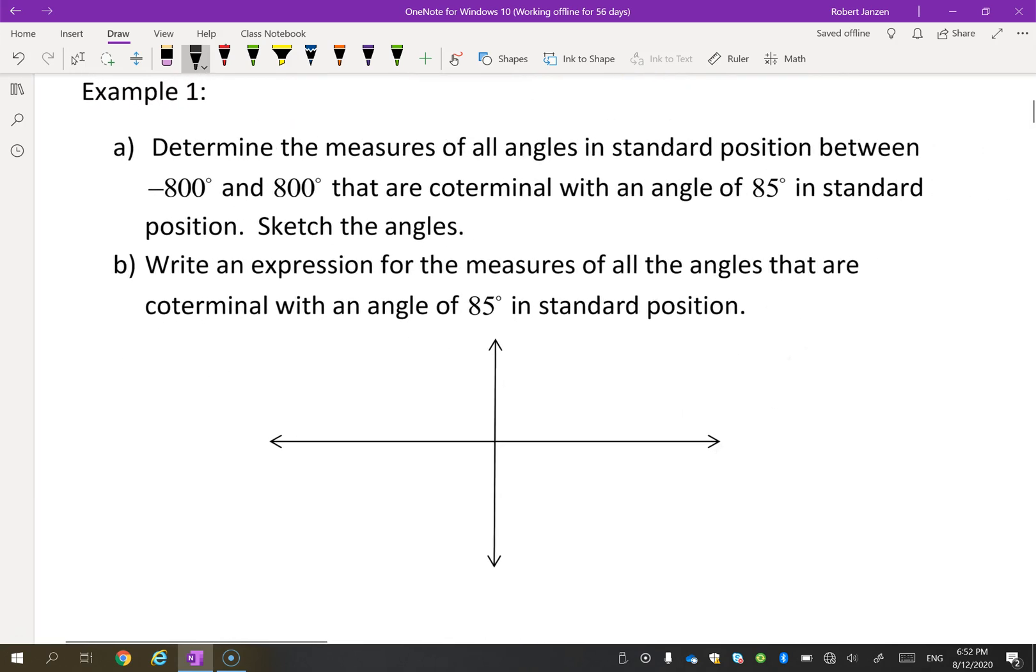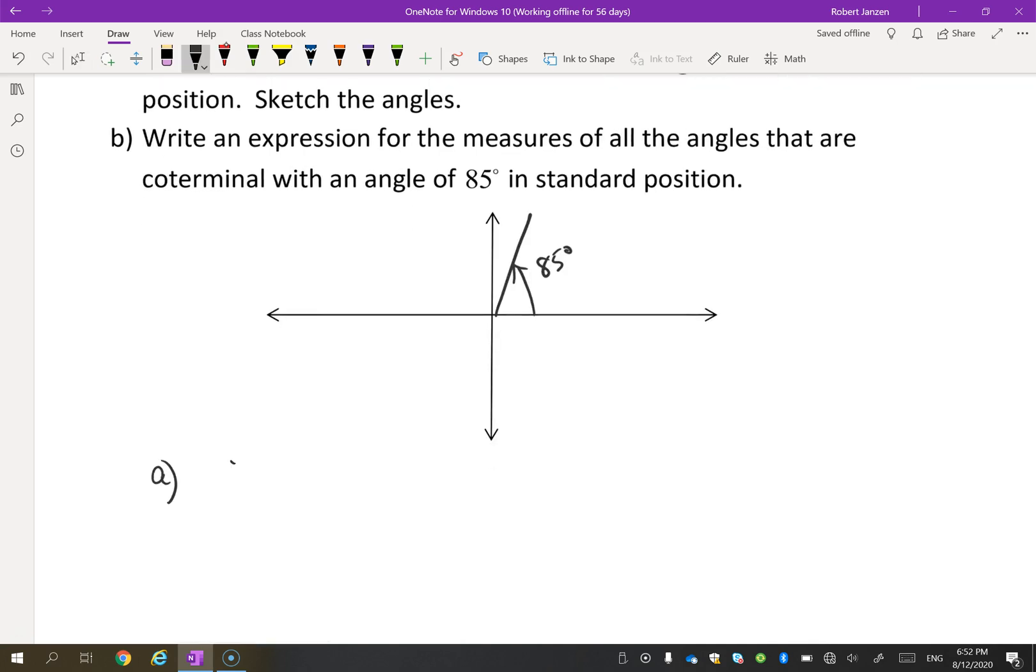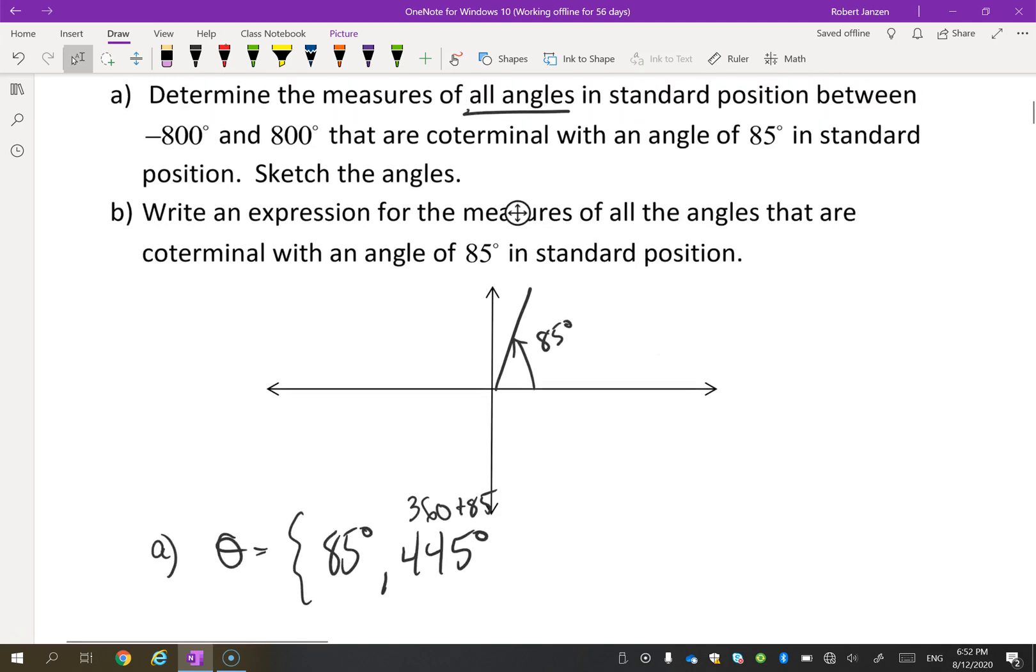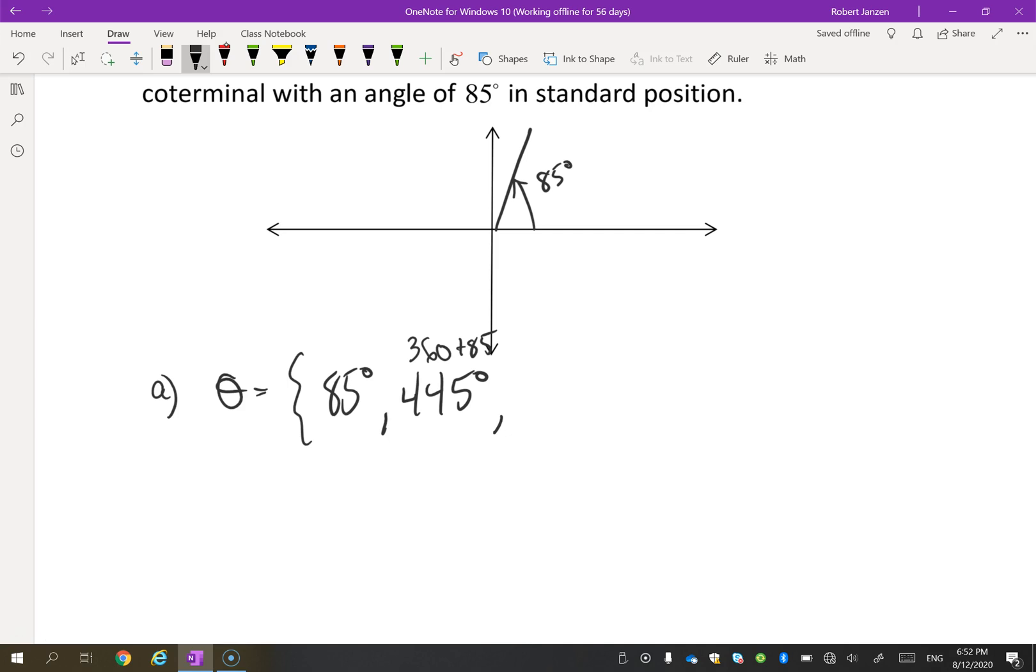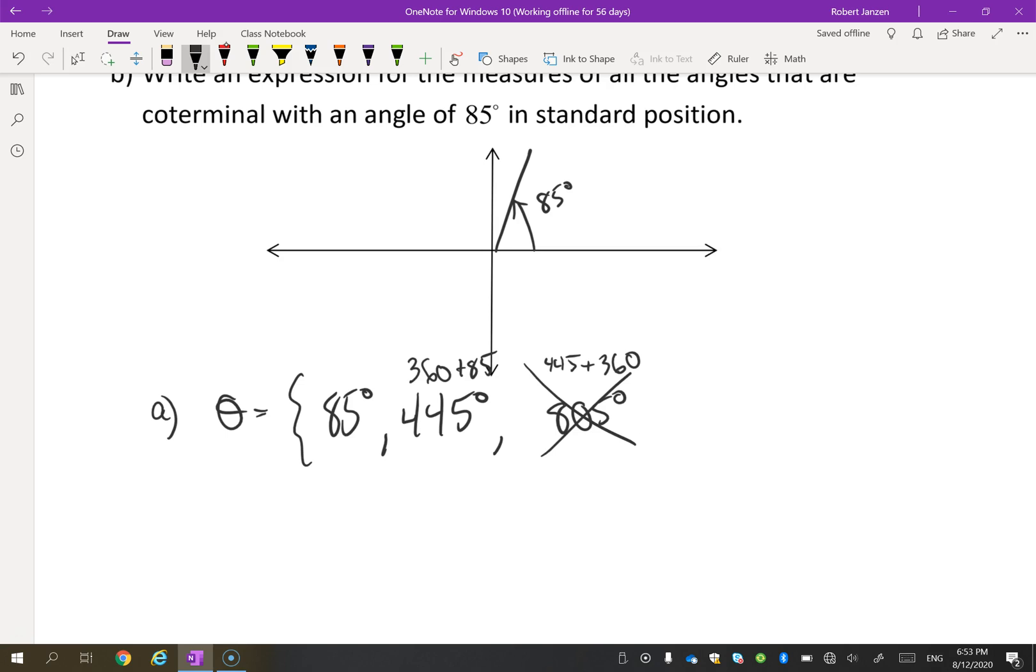So coterminal angles. Let's try a sample question. Determine the measures of all angles in standard position between negative 800 and 800 that are coterminal at an angle of 85 degrees. So here's 85 degrees. So let's list these. So here's part A. So our angles will be 85 is 1. What is it going to be if we go 360 plus 85? That's going to be 445 degrees. That one is between negative 800 and positive 800. Let's try again. Let's go 445 plus 360. So we'll go around one more time. That's going to give us 805 degrees. Is that between negative 800 and 800? It is not. So we're not going to count that one.